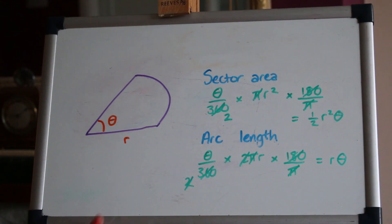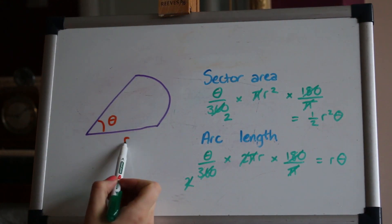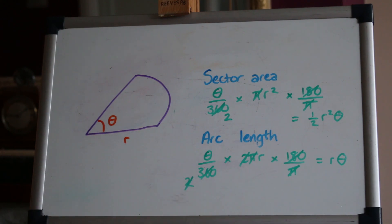So how easy is that? To find the length of the arc all you have to do is multiply the radius by the angle, rθ. Let's work through an example now.